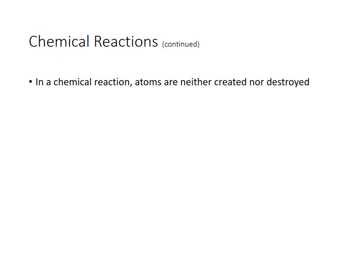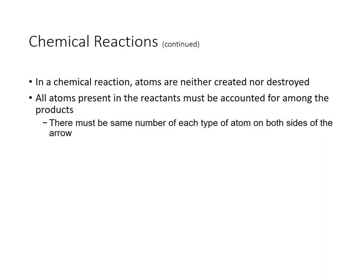All right, in a chemical reaction, atoms cannot be created and they can't be destroyed. You are not a wizard, Harry. You cannot just make stuff appear or disappear. All of the atoms that are present in the reactants must be accounted for among the products. They're arranged differently, but they didn't just appear or disappear. So in the end, we have to have the same number of each type of atom on both sides.